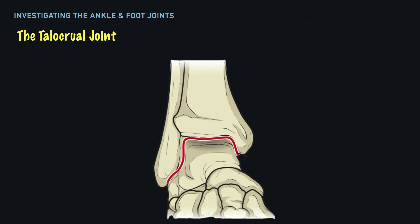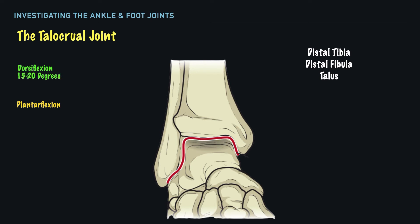Next up, let's take a look at what we should refer to as the true ankle joint. The name of this joint is the talocrural joint, and it's made up of the articulations between the talus, the distal tibia, and the distal fibula. It's here at this joint that we also have the production of movements such as dorsiflexion and plantarflexion. In terms of the motion available, we are provided with approximately 15 to 20 degrees of dorsiflexion and 50 degrees of plantarflexion. Lastly, let's classify this joint, which is a ginglymus joint.